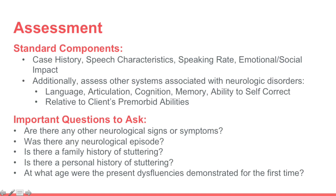When assessing a patient for possible neurogenic stuttering, it is important to gather the standard components used for any evaluation, including case history, speech characteristics, speaking rate, and the emotional-social impact of the disfluency. Additionally, we want to assess all other systems associated with neurological disorders, including but not limited to language, articulation, cognition, memory, and the ability to self-correct. It is ideal to compare findings to the patient's pre-morbid abilities if possible.